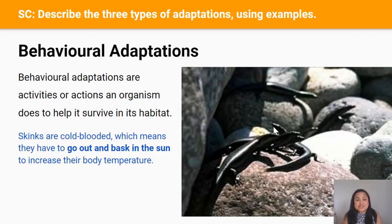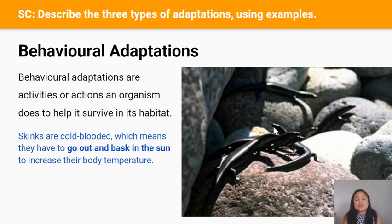Behavioral adaptations are activities or actions an organism does to help it survive in its habitat. For example, cold-blooded skinks go out of the shade and bask in the sun to warm their bodies up and raise their body temperature to a level that's optimal for their metabolism. If they're too cold their muscles won't work and they won't be able to get away from predators, whereas warming up in the sun allows them to move more quickly.